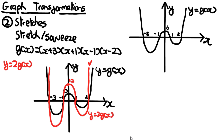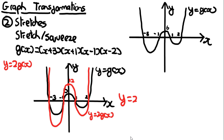Note that you need to distinguish between the two lines: y = 2g(x) shoots up quicker and is to the left of the original line, because all y values are multiplied by 2. The same applies on the other side where it shoots up quicker to the right. The equation is y = 2(x+3)(x+1)(x-1)(x-2).